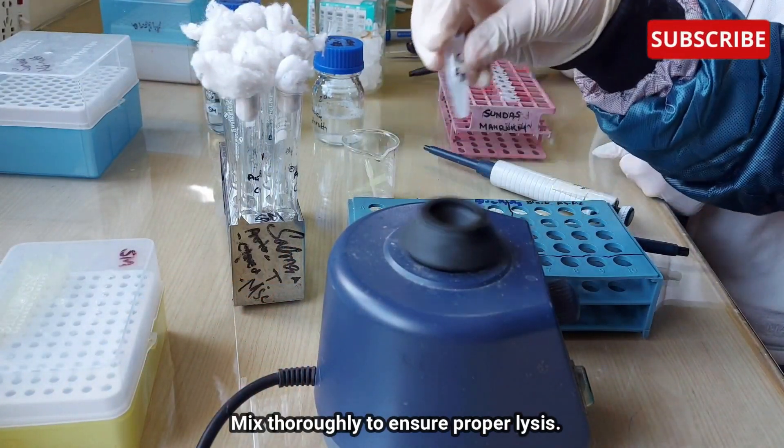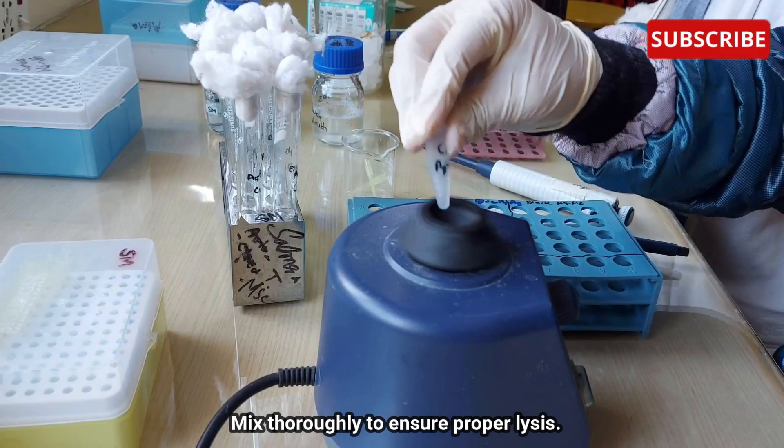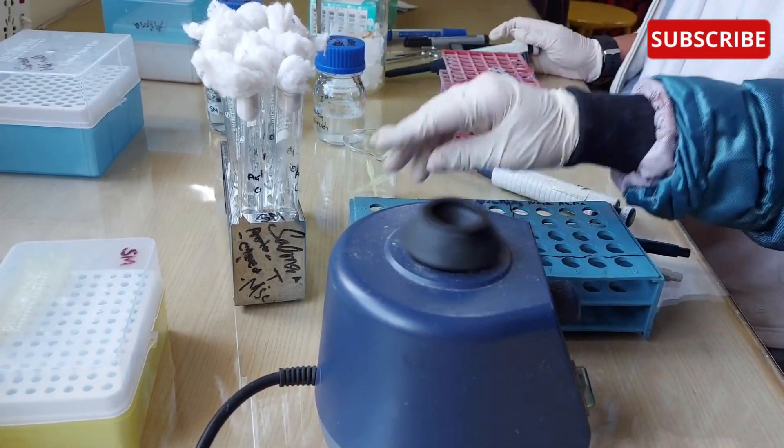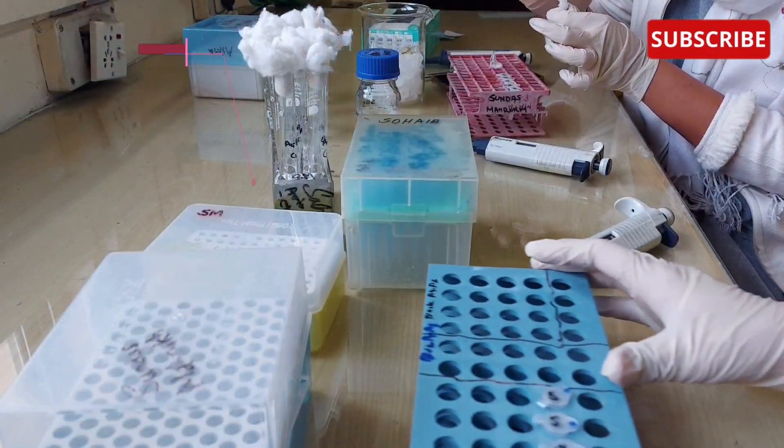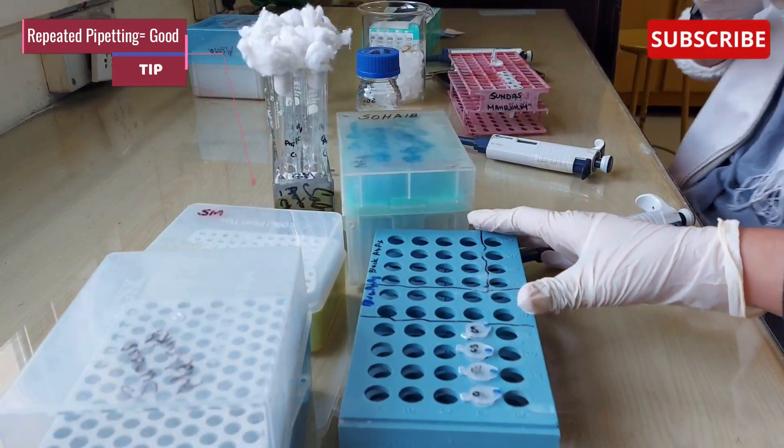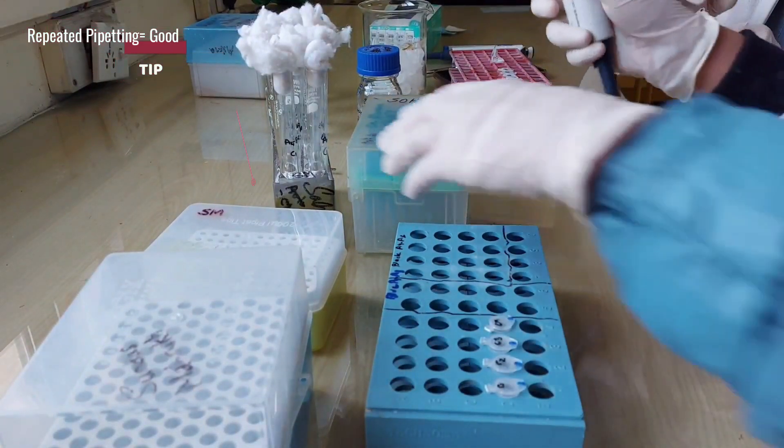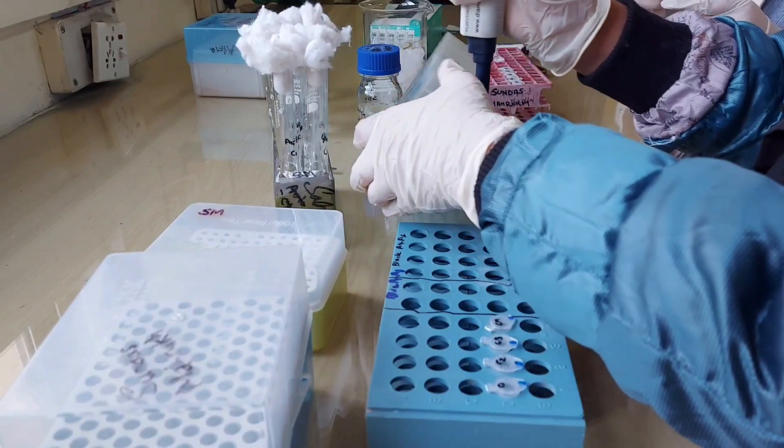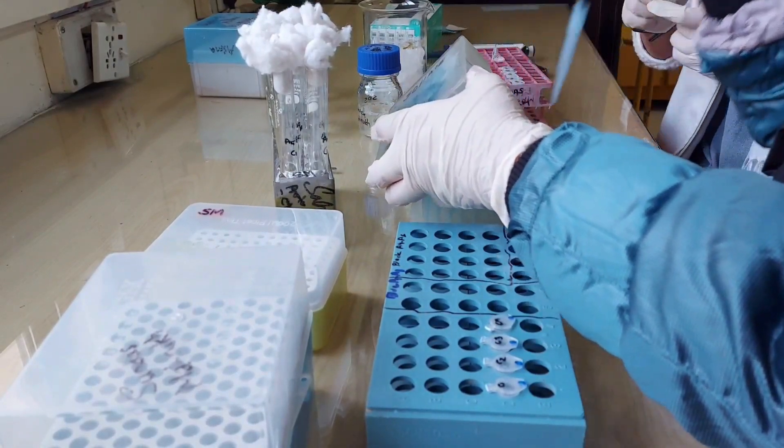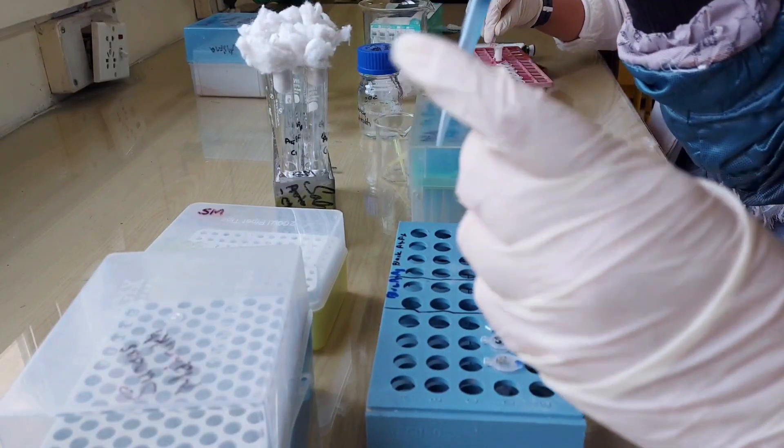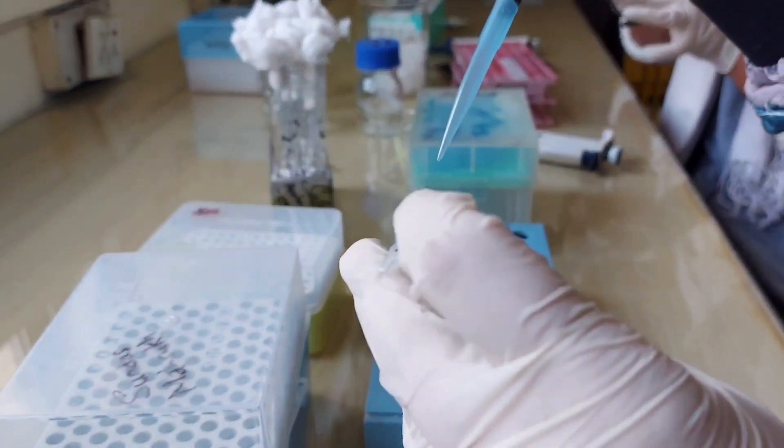Now mix thoroughly to ensure proper lysis. If you keep on pipetting and vortexing the sample, you will have a great result at the end. If you want to know that your cells are lysed, you will get bubbling of the sample. A foam will be created in the eppendorfs. This will ensure that the cells are properly lysed. So for a proper DNA isolation, this step is crucial.